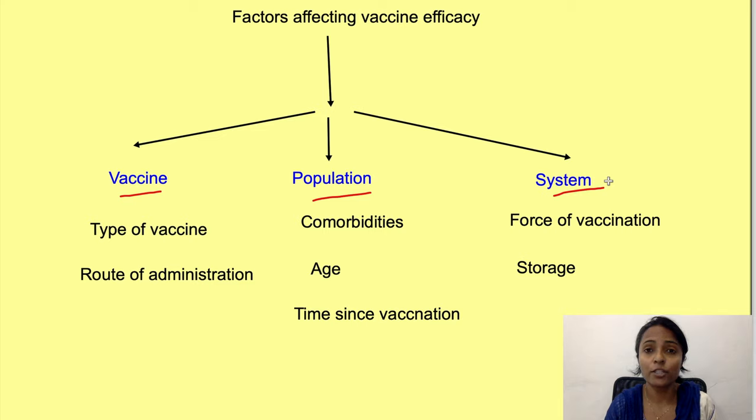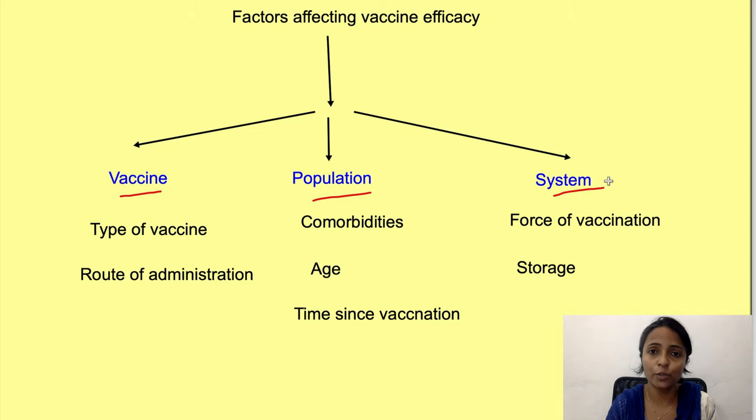So those are the factors which affect vaccine efficacy: factors related to the vaccine, factors related to the population, and factors related to the system. Thanks for watching — if you liked it, press the like button, share the video, and don't forget to subscribe to the channel Physiology Okten.